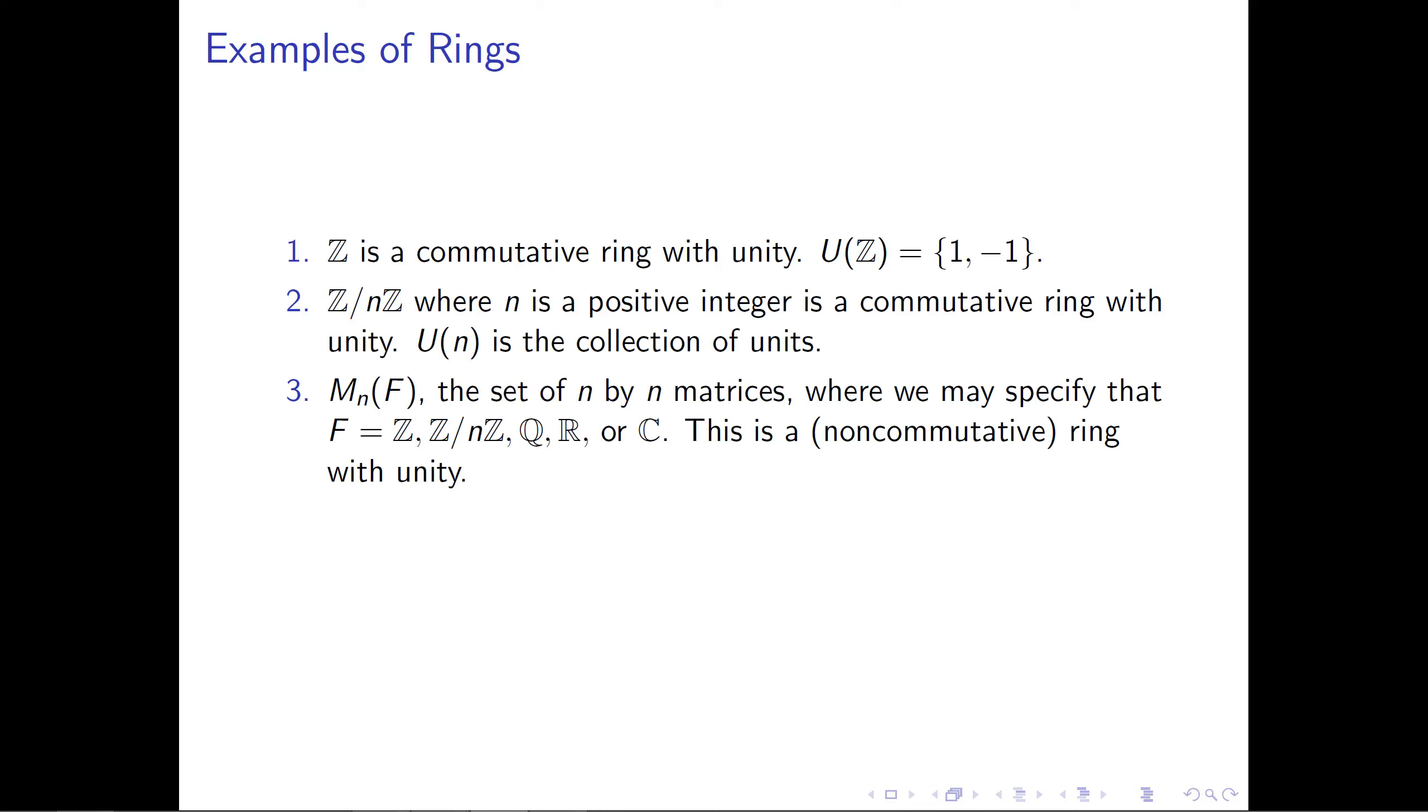As our third example, I'm going to write M_n(F). This is the set of n by n matrices, where the entries in those matrices come from a specific set F. We're going to typically take the set F to be either the integers, the integers mod n for some n, maybe the rational numbers, the real numbers, or perhaps even the complex numbers. This is a good example to keep in mind, because this is a non-commutative ring. Although it is true that you can add matrices in any order, that's the addition is commutative part, matrix multiplication is something we know is not commutative. So this is a good example to keep in mind as an example where you don't have a commutative ring.